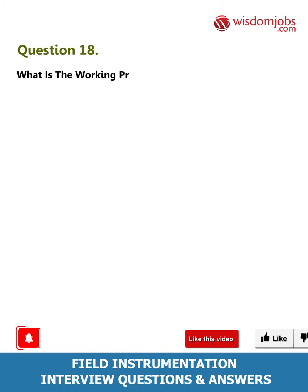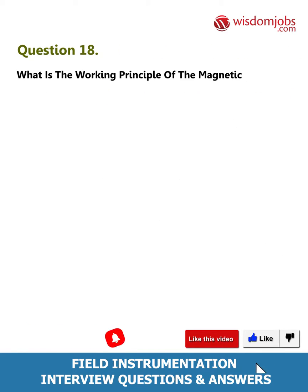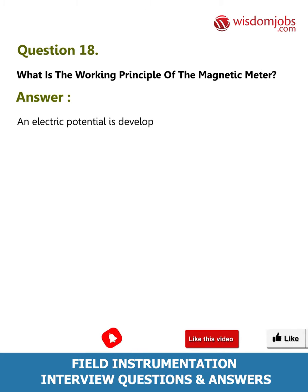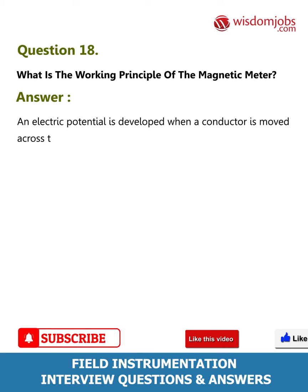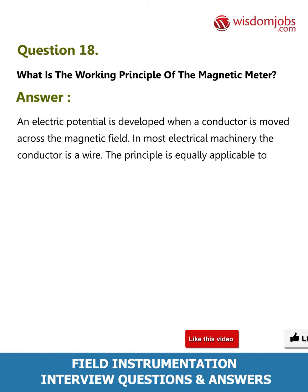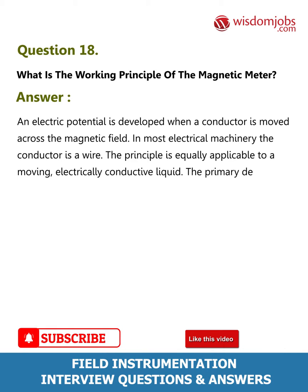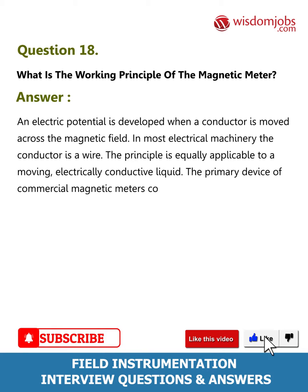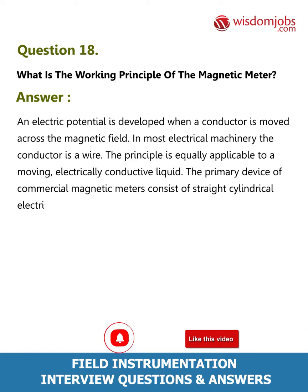Question 18: What is the working principle of the magnetic meter? Answer: An electric potential is developed when a conductor is moved across a magnetic field. In most electrical machinery the conductor is a wire, but the principle is equally applicable to a moving electrically conductive liquid. The primary device of commercial magnetic meters consists of a straight cylindrical electrically insulated tube.